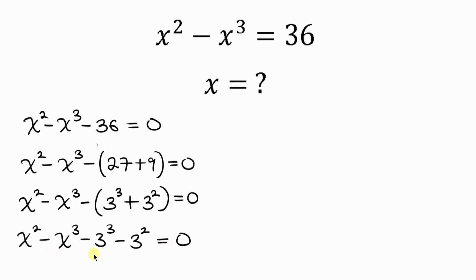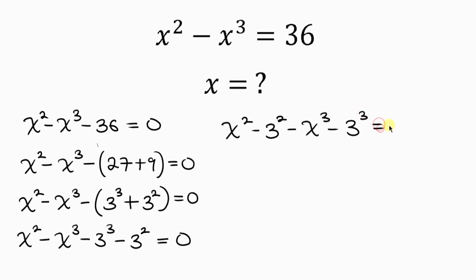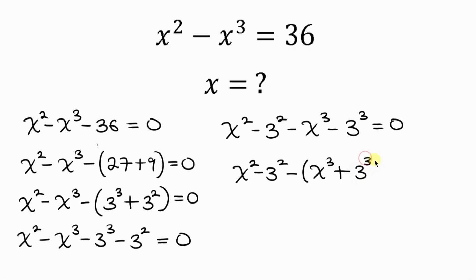Now we just have to rearrange. We have x squared, and we move the 3 squared next to it giving negative 3 squared. This is negative x cubed, and we have negative 3 cubed, equal to 0. I want this x cubed to be positive, so I'll simplify this into x squared minus 3 squared, minus a bracket containing x cubed, where minus times minus becomes plus 3 cubed, equal to 0. So now the x cubed is positive.